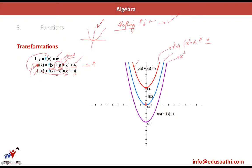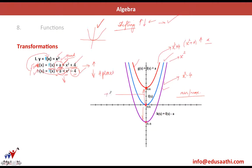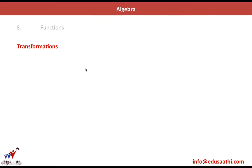g(x) is similar to the f(x) graph but shifted four places up. h(x) is shifted four places down — the purple graph for x² - 4. Whenever you shift on the y-axis, you do it from the point of minima or maxima. If it is +a the graph moves up; if it is -a it moves down. So x² + a moves up by a points and x² - a moves down by a points.